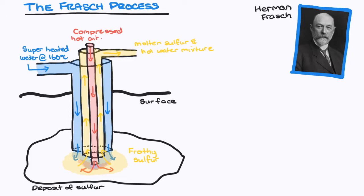Sulfur's low melting point of 115 degrees Celsius means that the water has to be kept under pressure. You can then collect the molten sulfur in another bin where it solidifies.